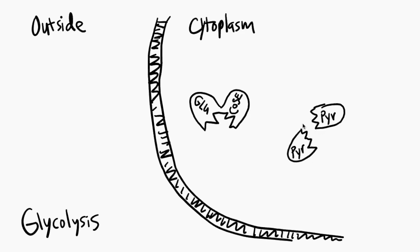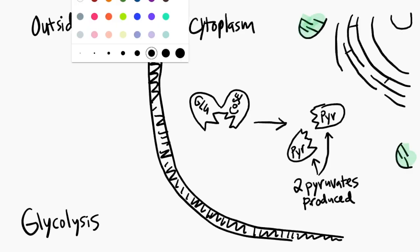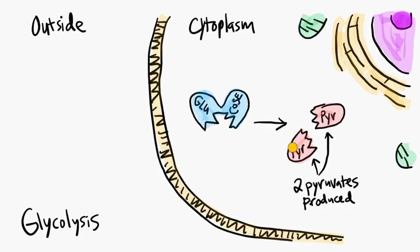So during glycolysis, glucose is actually split right down the middle into two new molecules called pyruvate. This all happens in the cytoplasm and actually doesn't require any oxygen. And because it doesn't require oxygen, it is known as an anaerobic process.